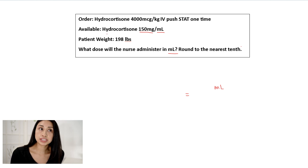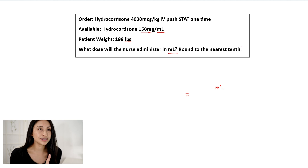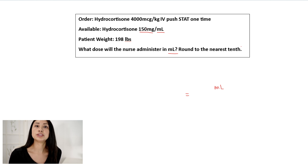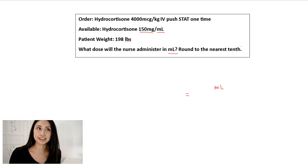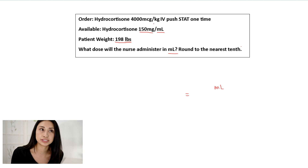Now that is not what I'm giving the patient. What I am giving the patient is under the order. Under the order, I see hydrocortisone 4,000 micrograms per kilogram. That means that for every one kilogram that my patient weighs, I have to give 4,000 micrograms. So if the patient weighs one kilogram, I give 4,000 micrograms; if two kilograms, that's 8,000 micrograms. I have patient weight given in pounds, so at some point I am going to have to convert pounds to kilograms to figure out how much hydrocortisone this patient is getting based on their weight.